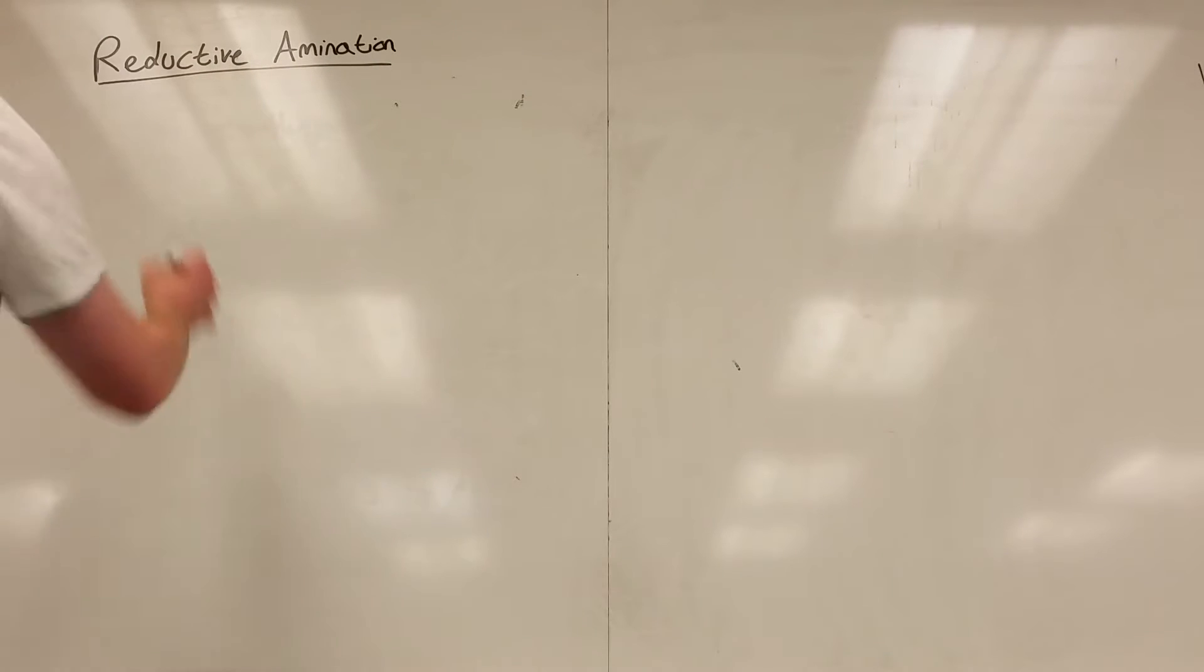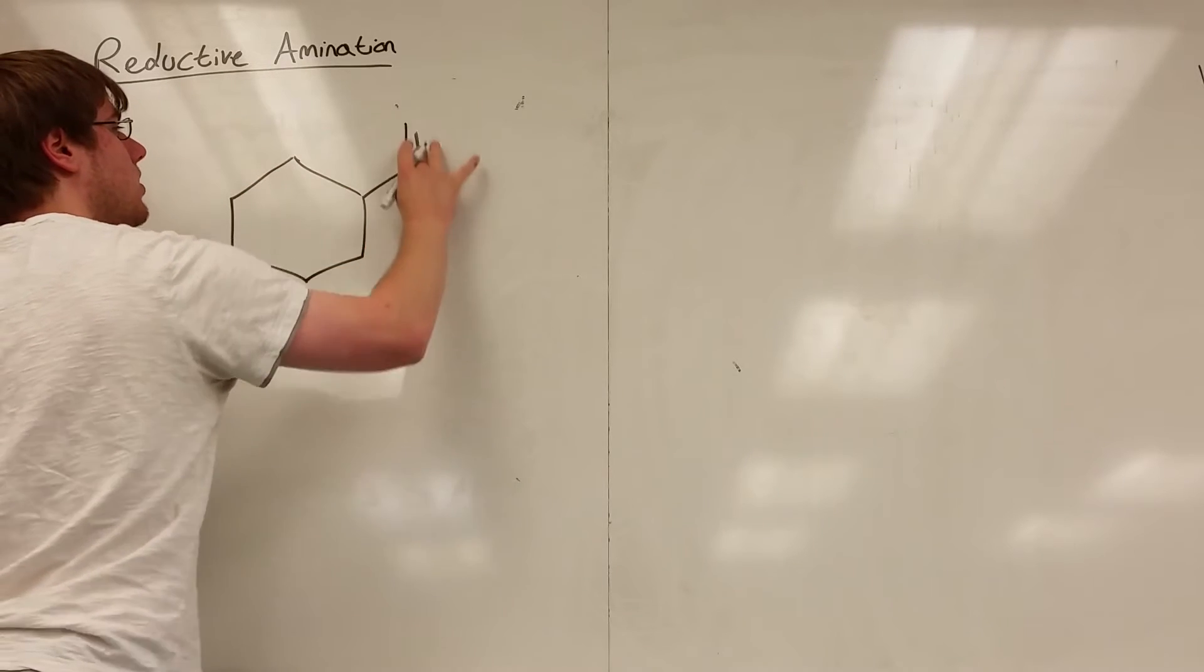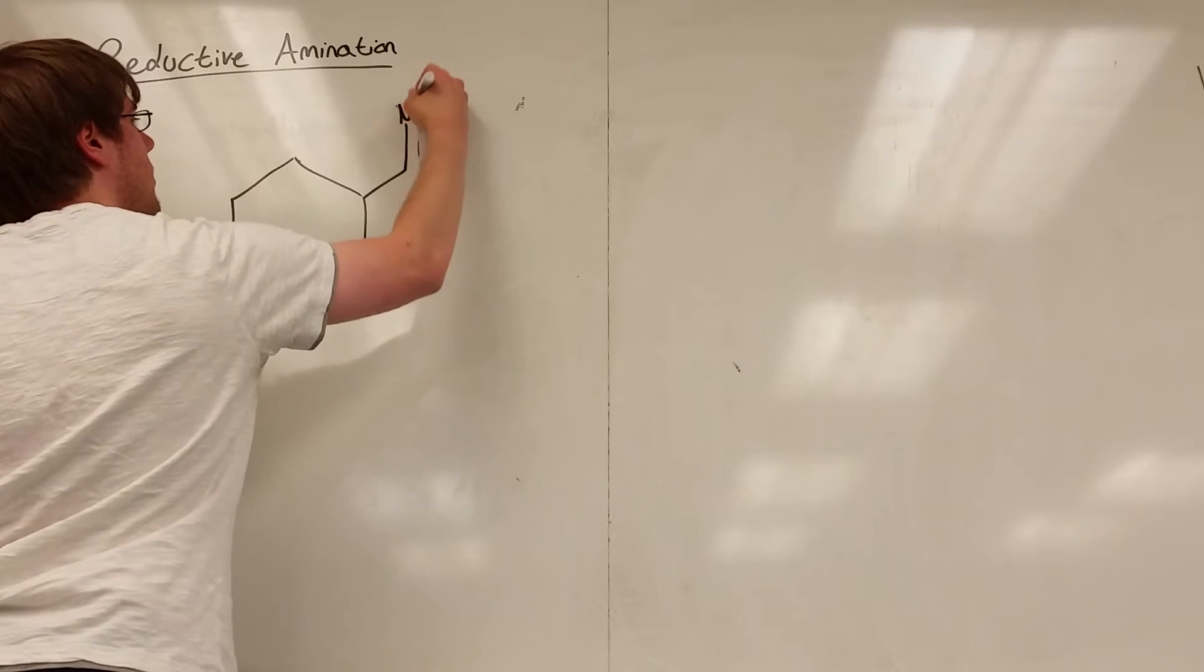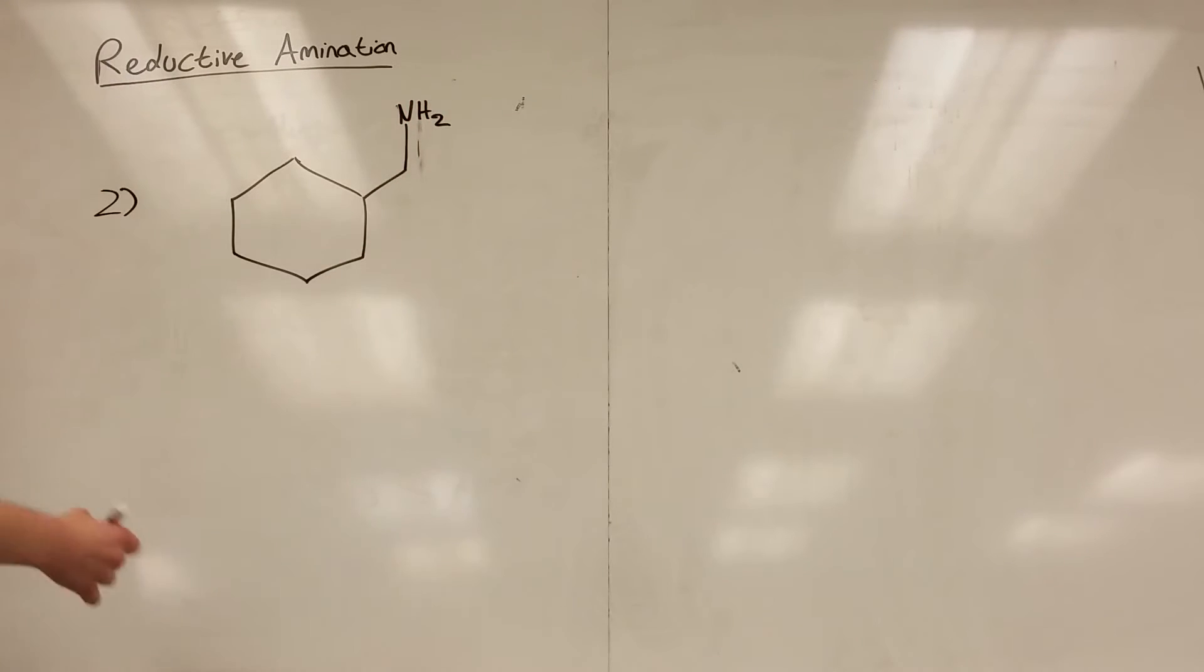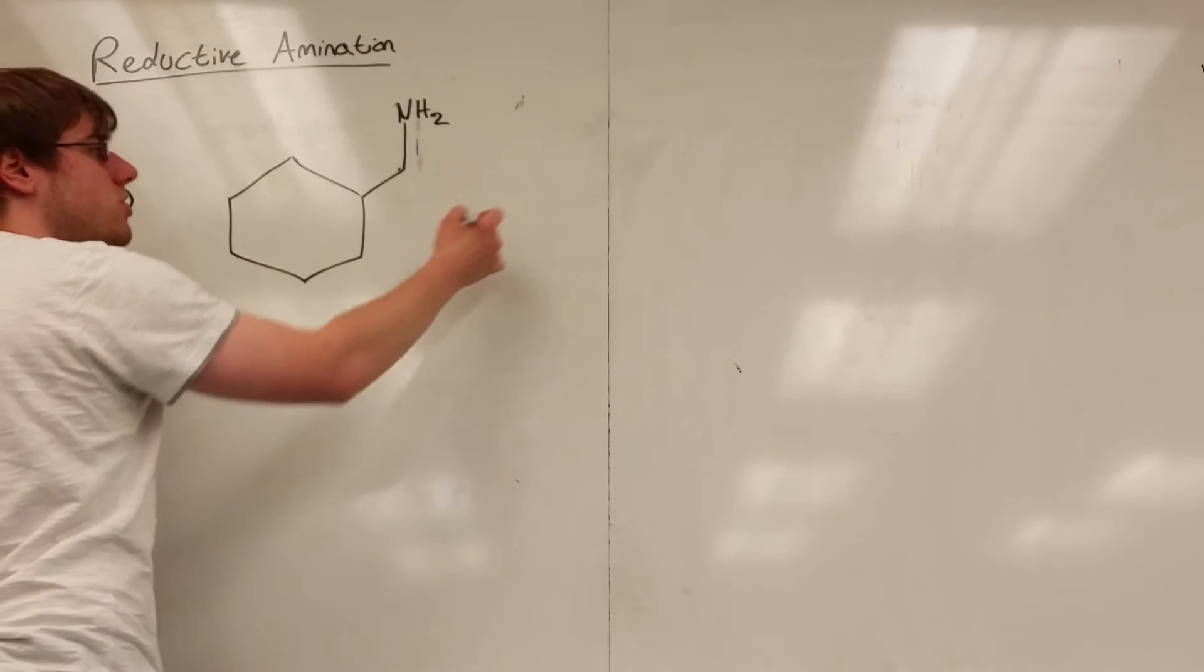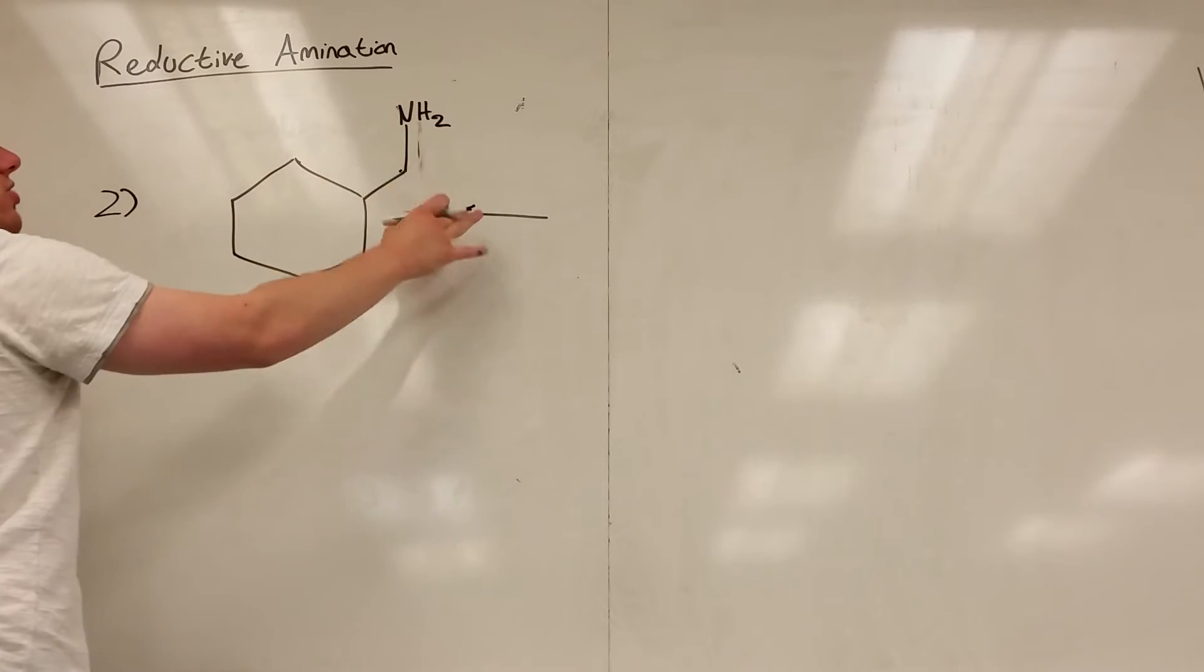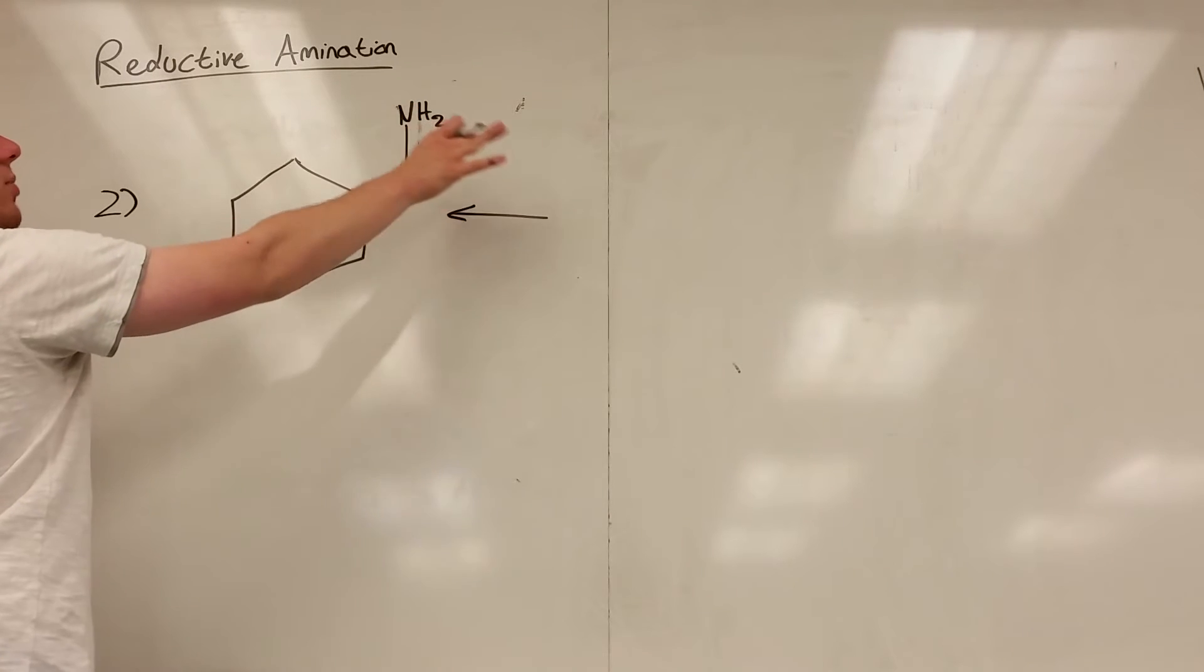Number two, we have to synthesize a six-membered ring. One, two, three, four, five, six. With a carbon and a NH2 coming off of it. So once again, we see a carbon that is single bonded to a nitrogen. So I'm thinking reductive amination. So I'm going to look at the carbon and the single bonds of the nitrogen. I'm going to erase that carbon nitrogen bond.